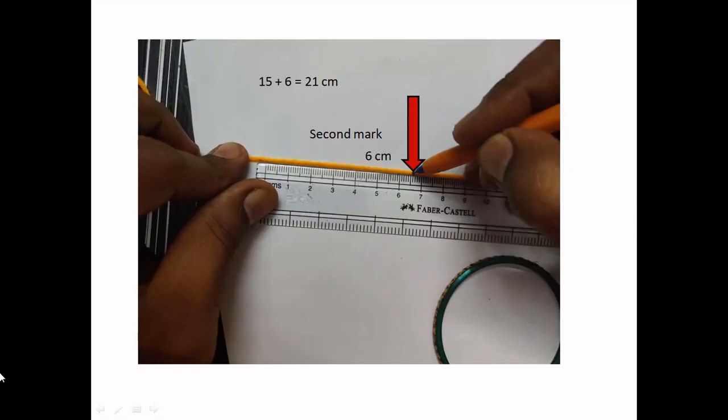So after that the first mark is here, the end point comes here. So the first mark is 15 centimeters. After that it is 6 centimeters. So the total length is 21 centimeters. So the ornament's total length is 21 centimeters.